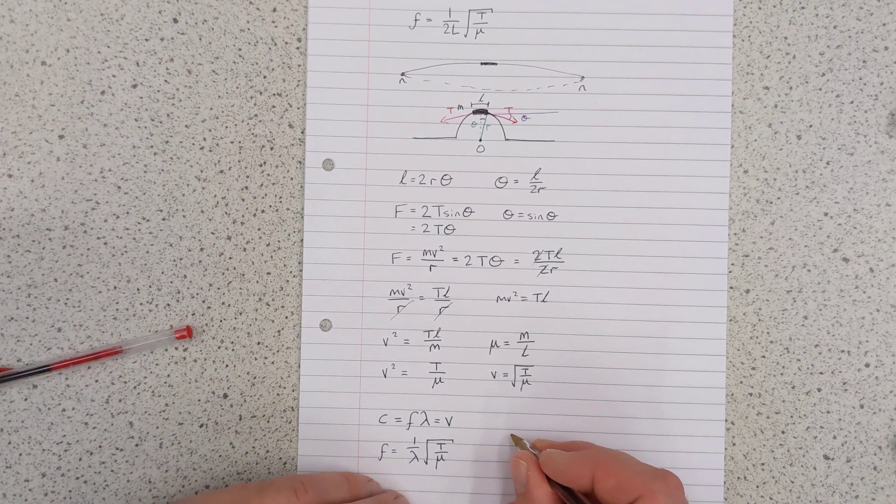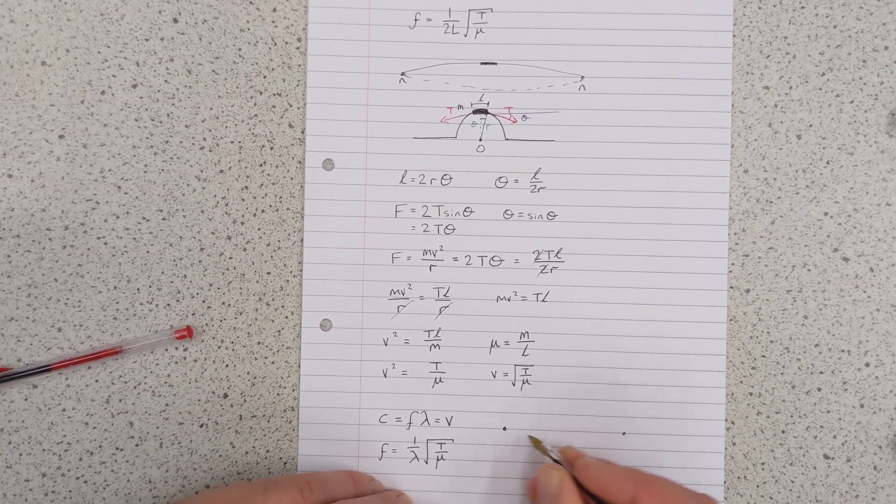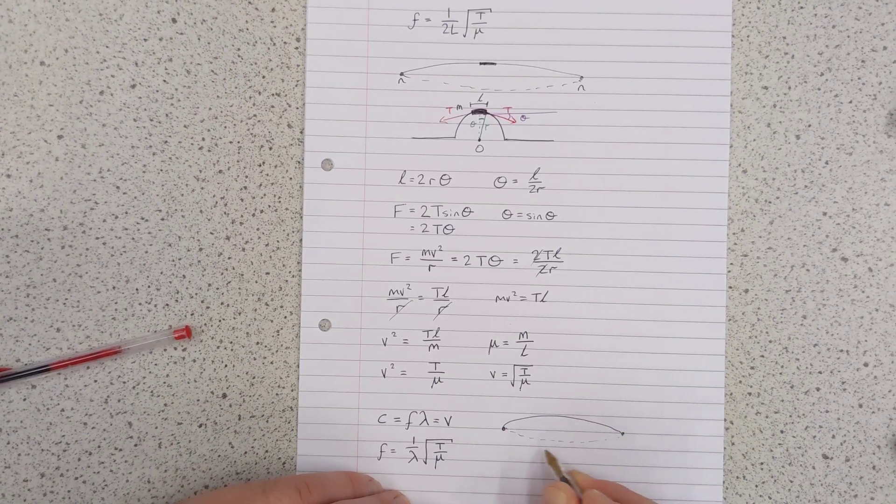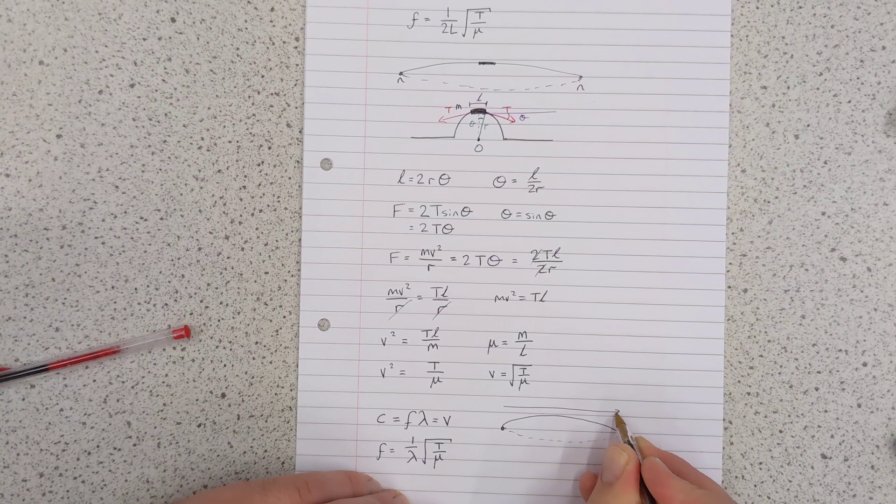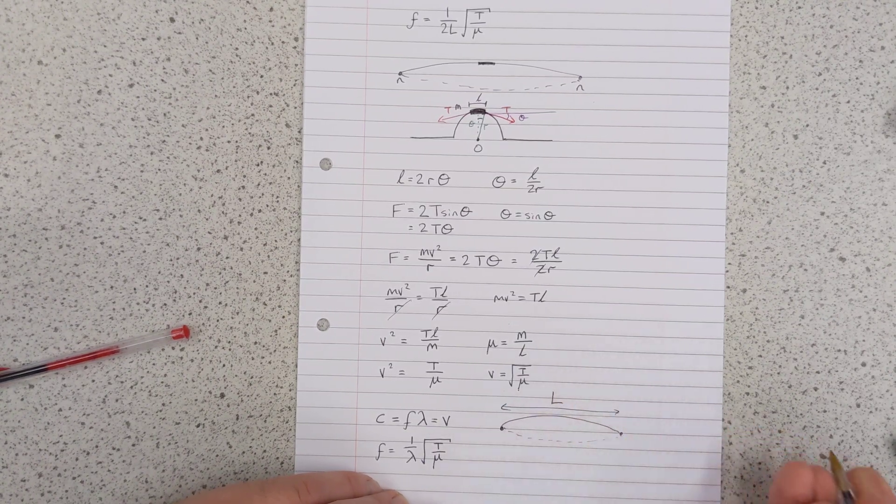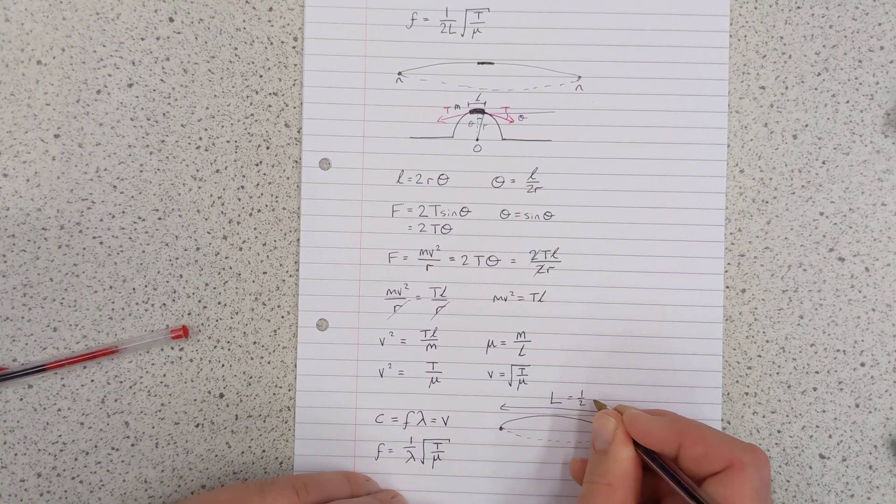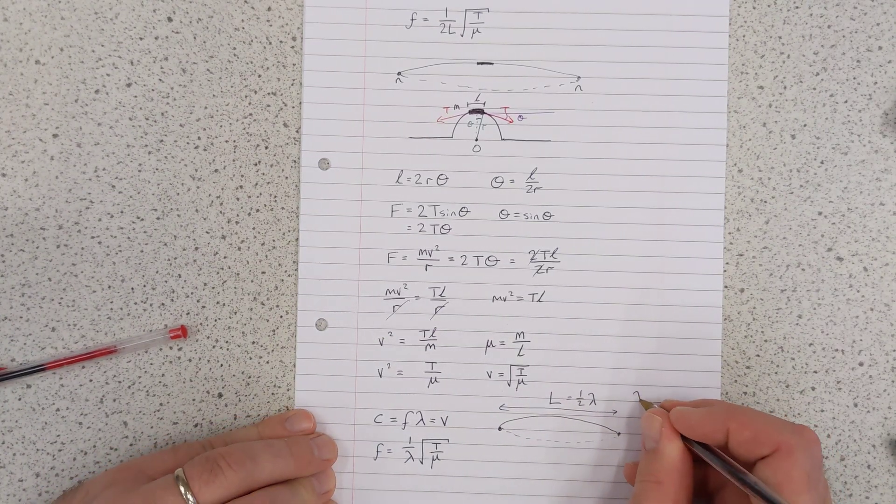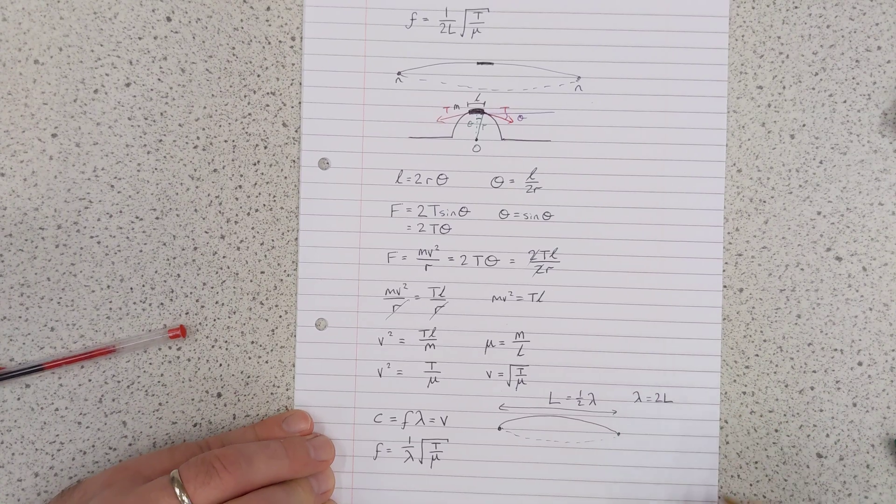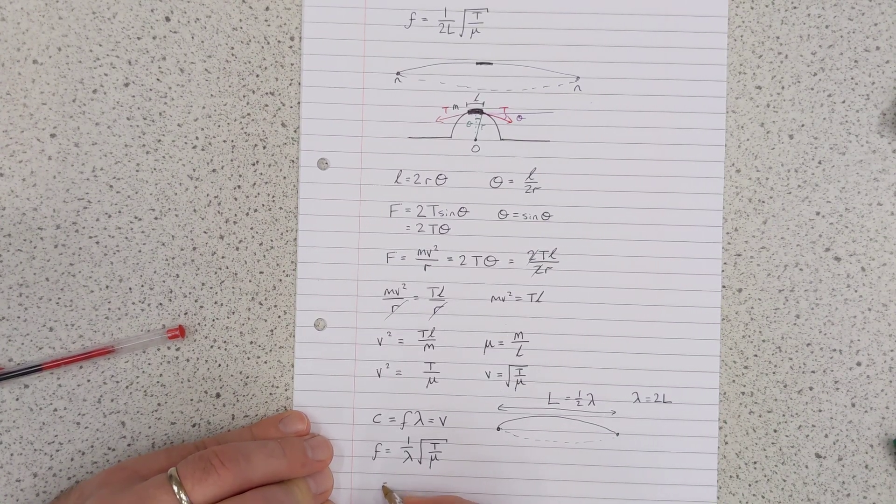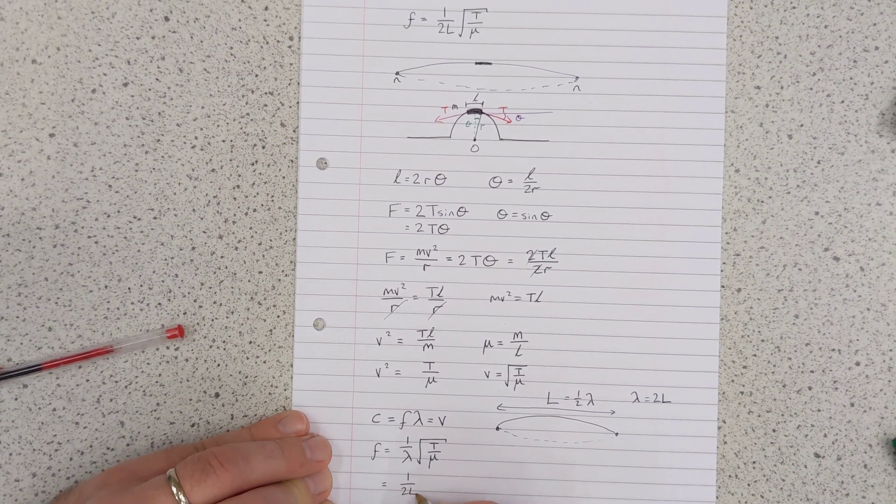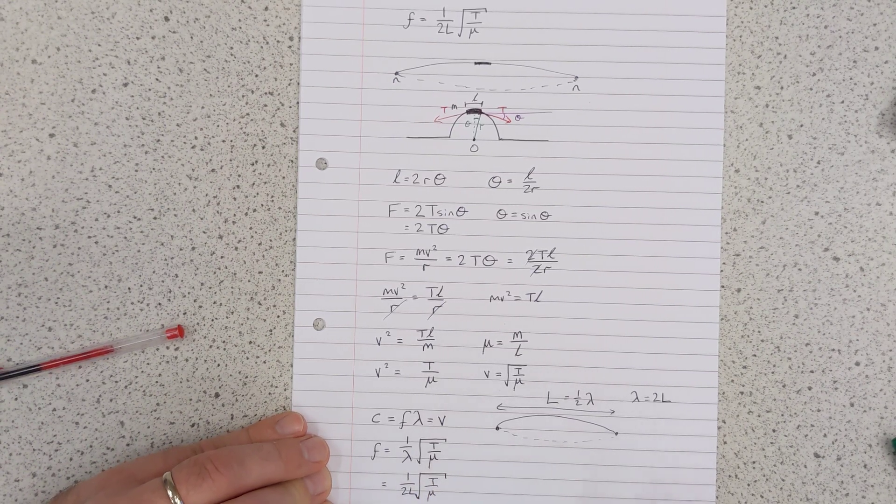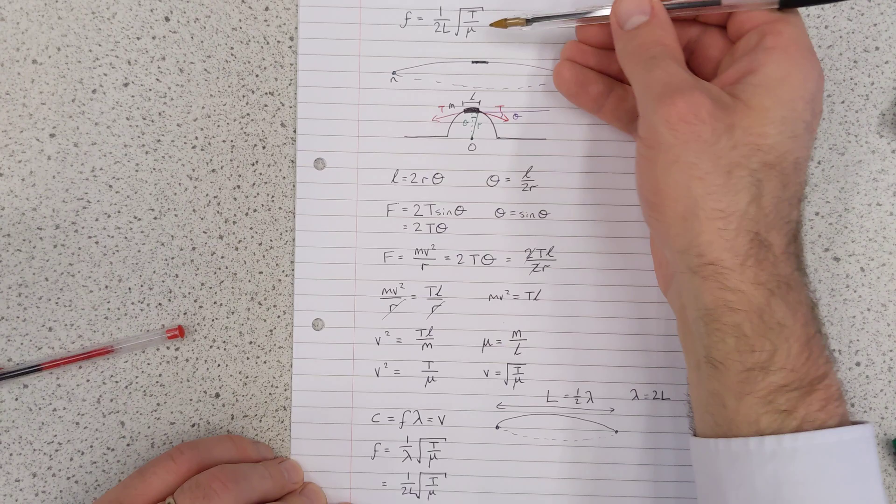Well, now for the lambda part. Well, on our first harmonic, there's our first harmonic redrawn, we know that the length of the string L is equal to half a wavelength. Another way of saying that is that a wavelength is equal to 2L. So I can plug that into the equation and get 1 over 2L multiplied by the square root of T over mu. And that's the equation we were deriving.